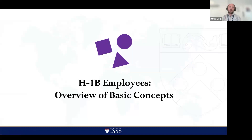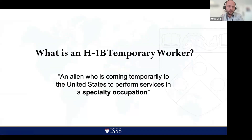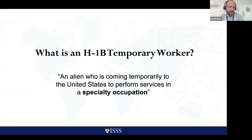So H-1B — we're going to look at the basic concepts of the H-1B to start. An H-1B is for an alien who is coming temporarily to the United States to perform services in a specialty occupation. A lot of positions at Penn fall under this, like research associates, professors, and many other roles. It's hard to get into all the specifics, but that's the basic gist.